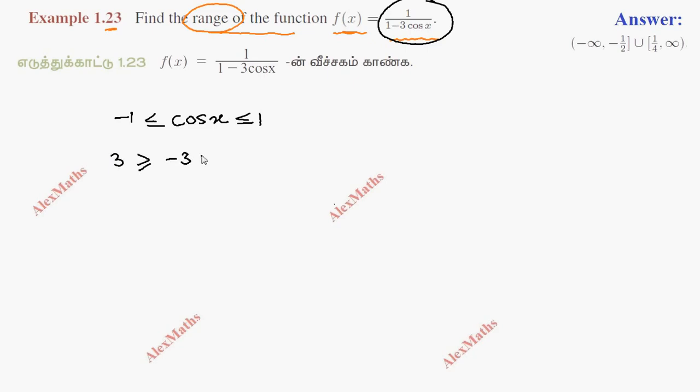So minus 3 cos x. We have minus 3 cos x greater than or equal to minus 3. If we add 1, 1 plus 3 equals... so 1 minus 3 cos x... 4 greater than or equal to 1 minus 3 cos x greater than or equal to minus 2.